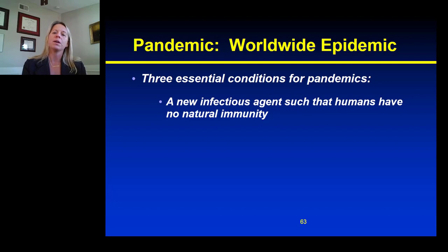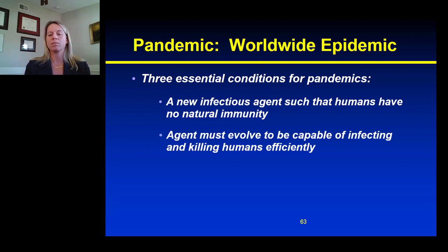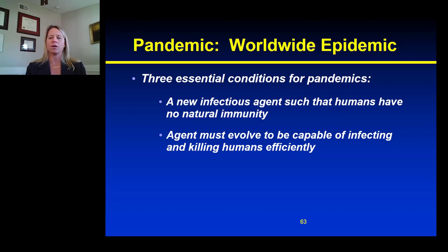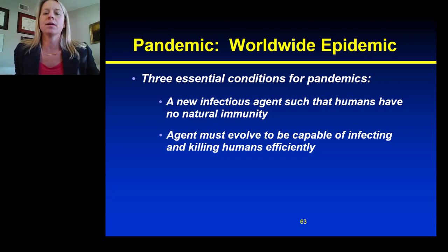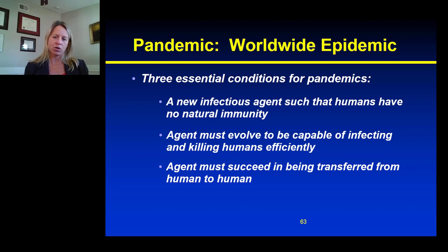A good example of this would be a new strain of influenza that may have evolved over time and is presenting in humans, for which there's no natural immunity to that strain of flu. The second condition for a pandemic is when the agent involved is capable of infecting and sometimes killing humans very efficiently. And the third condition is when that agent must succeed in being transferred from human to human.